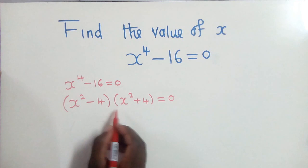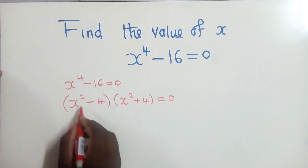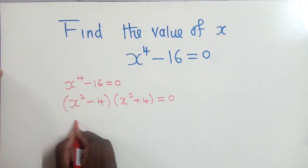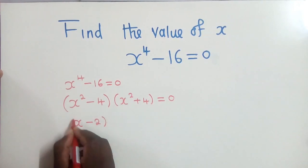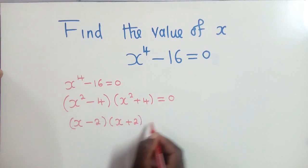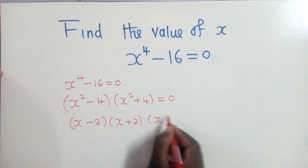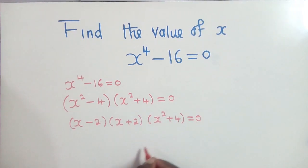So the next thing here will be to apply the difference of two squares again right here. So it will be (x - 2) and here (x + 2). Here we maintain x^2 + 4 equals 0.